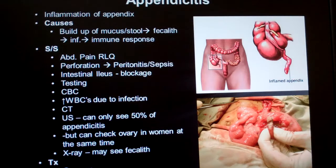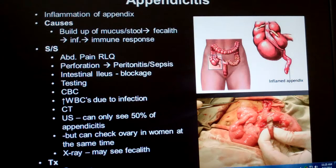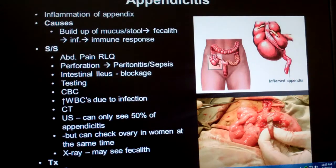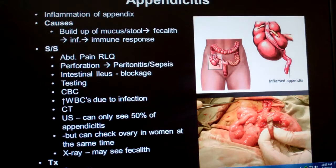We're probably all familiar with appendicitis. Did you know that appendicitis is the most common acute cause of abdominal surgery? Acute means that it's happening fast, contrasted with chronic disease that comes on slowly. Did you also know that 20% to 25% of appendixes removed are not actually infected?